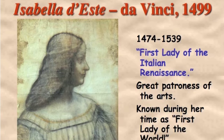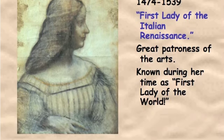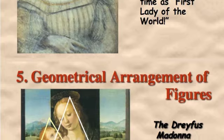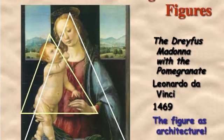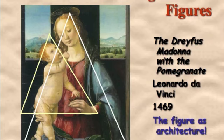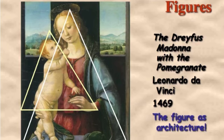This slide is not a characteristic — it's just an example of a patron during the Renaissance: a wealthy woman named Isabella. The fifth characteristic is geometrical arrangement of figures. This is a da Vinci painting where structure was very important. You can see examples of geometry throughout — the Madonna here looks almost like a triangle in the way her body is shaped, and notice the triangular mountains in the background.